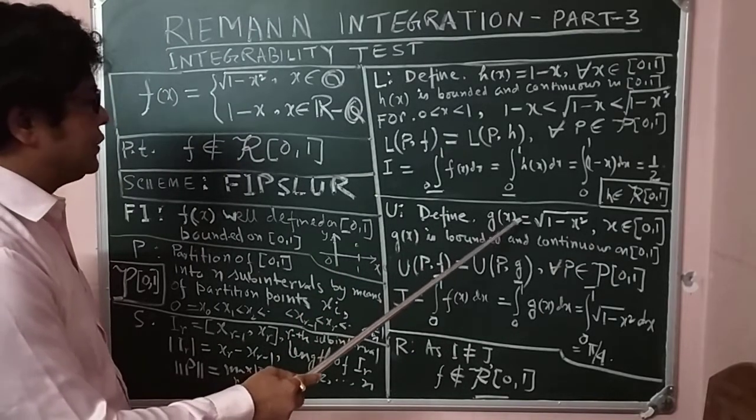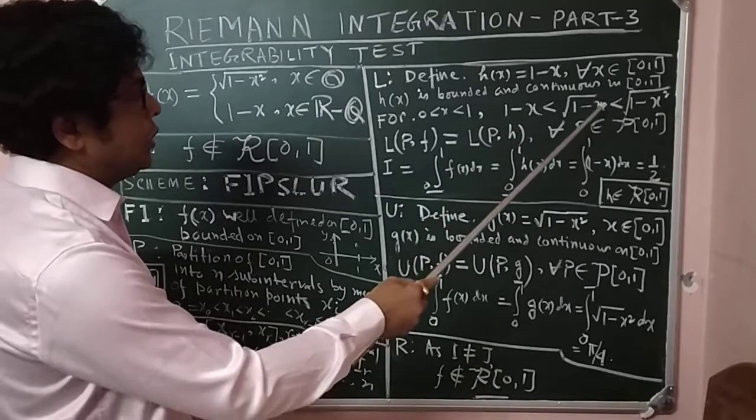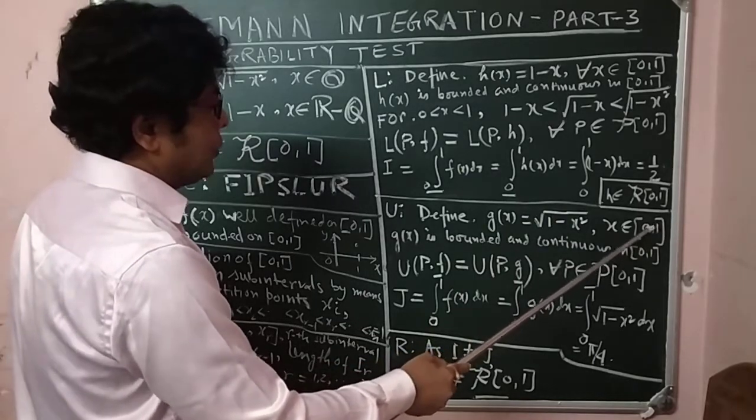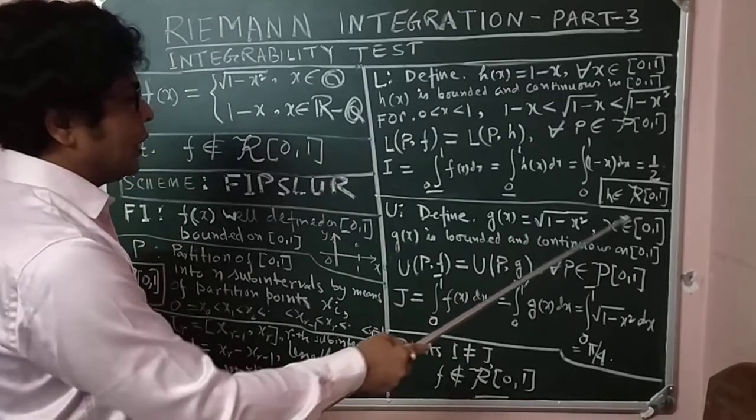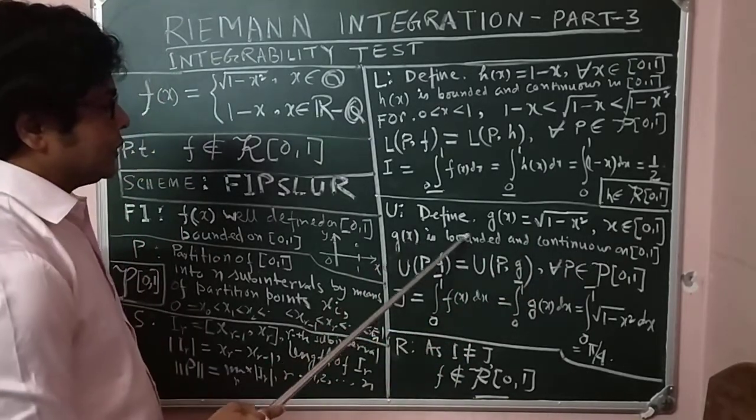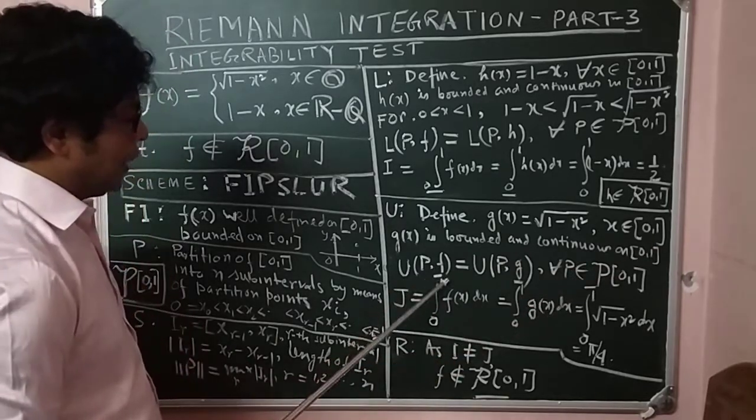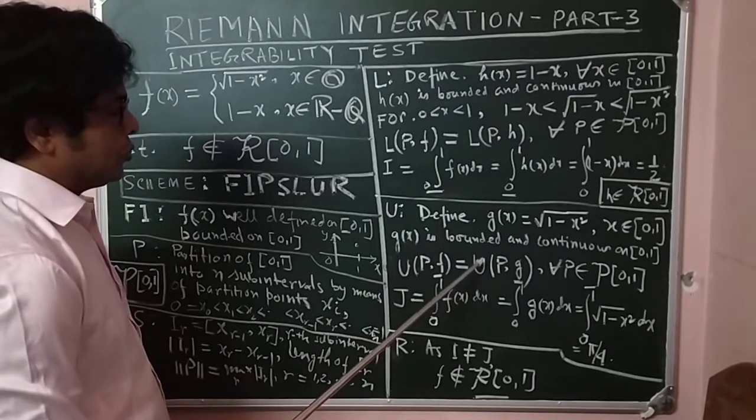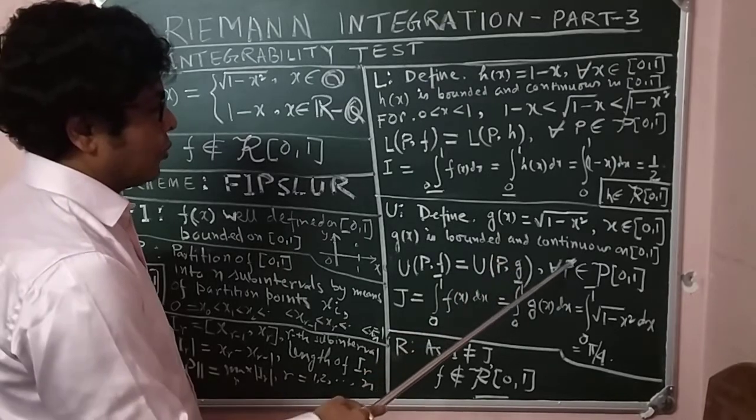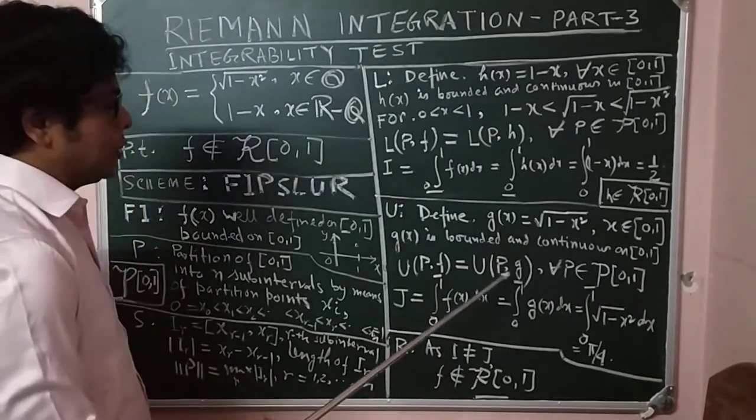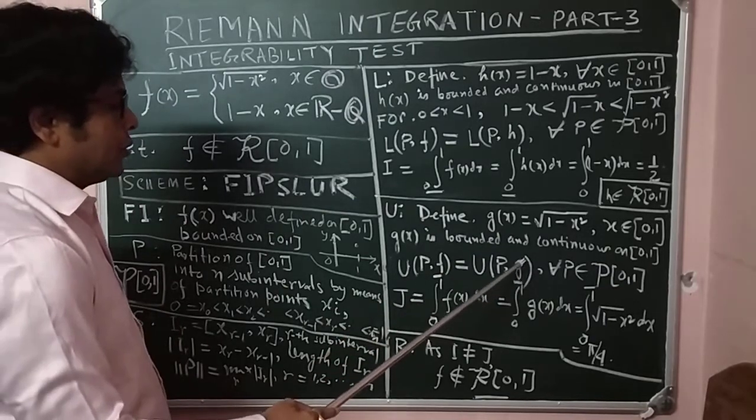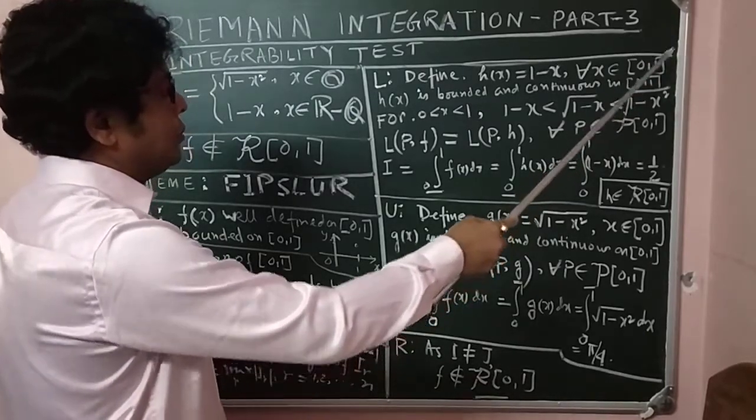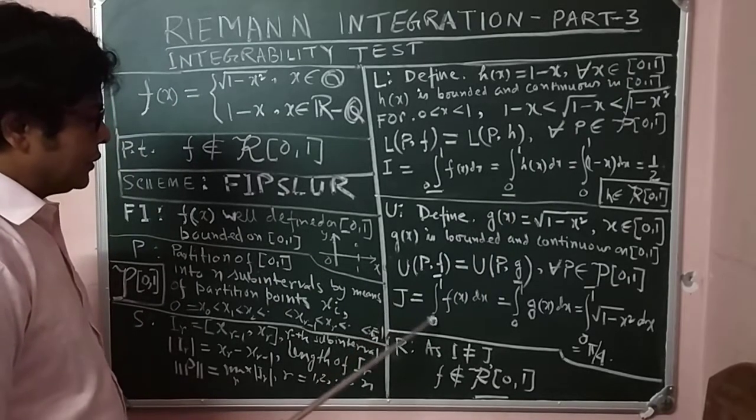We define the upper part. For upper part, I have defined a function g(x) = √(1-x²). With this inequality I can say this is the maximum value at any sub-interval continuing between 0 and 1. g(x) is bounded and continuous on [0,1], so U(P,f), the upper sum, reduces to U(P,g) for all P ∈ P[0,1].